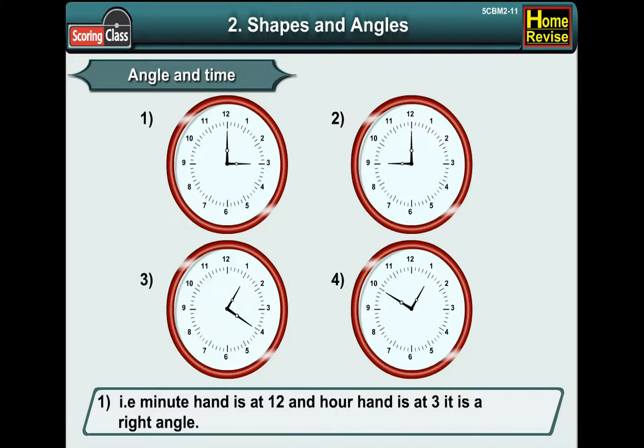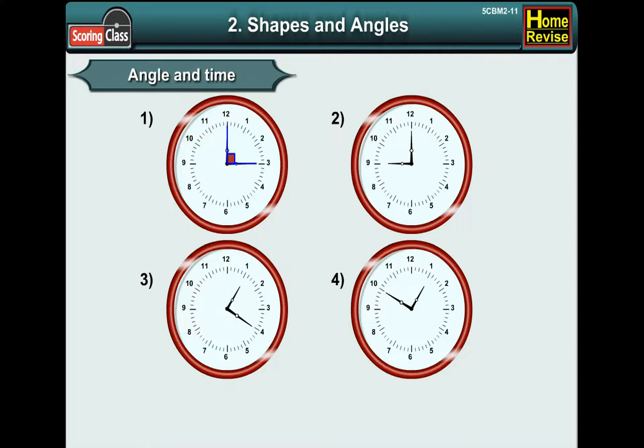Well, when the clock shows 3 o'clock, which means our minute hand is at, correct, 12. And our hour hand is at right angle. Then the clock hands are making a right angle again. Alright.